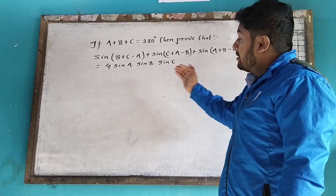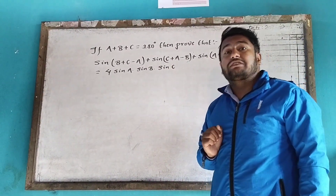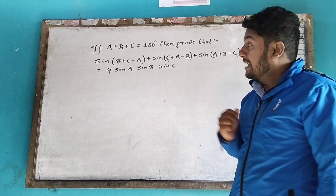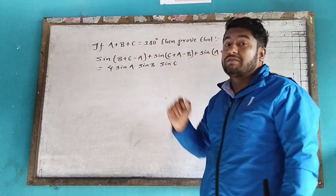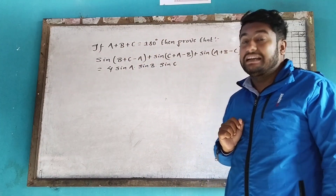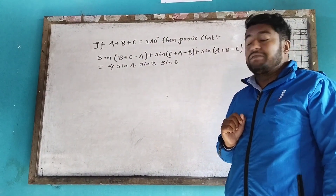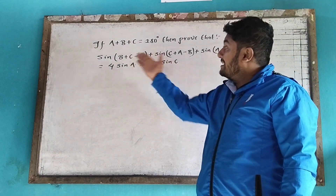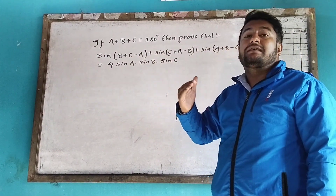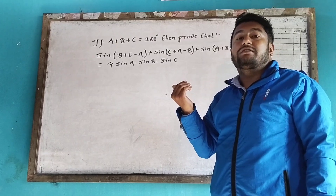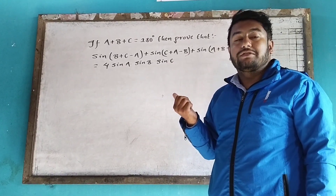If A plus B plus C is equal to 180 degrees, then prove the given trigonometric identity.